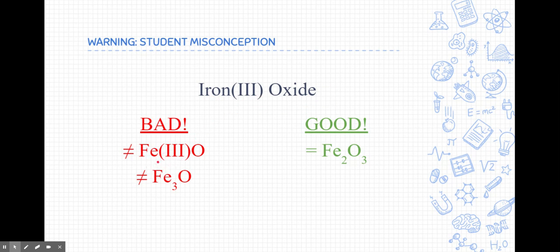We only use Roman numerals in the name. Here's another bad use of that problem. Some students use the Roman numerals to represent how many irons there are. So you see Fe3, because some students take this three to represent the number, and that's not true as well.